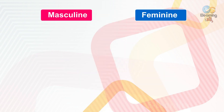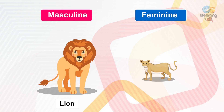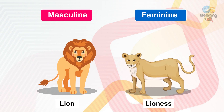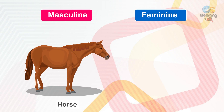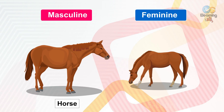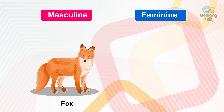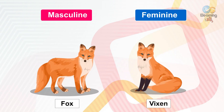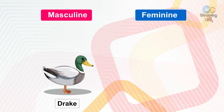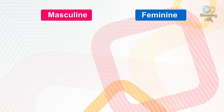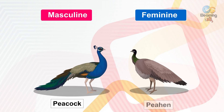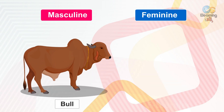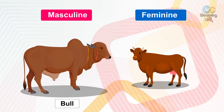Now let us see some examples of masculine and feminine animals. Lion and lioness, tiger and tigress, horse and mare, fox and vixen, drake and duck, cock and hen, peacock and peahen, bull and cow.